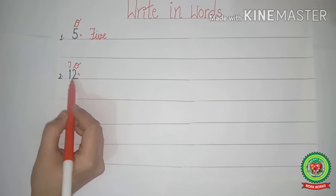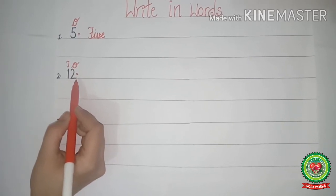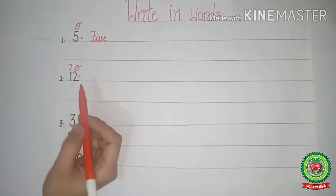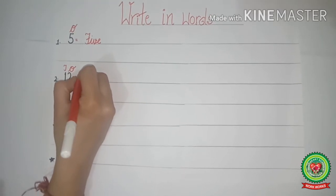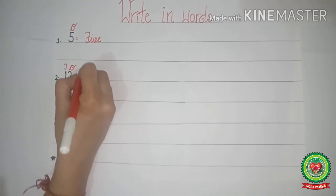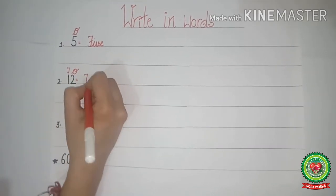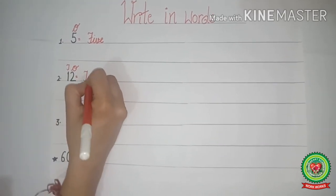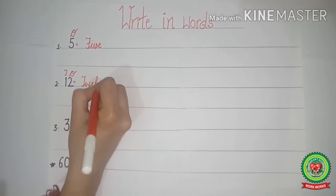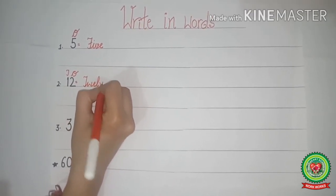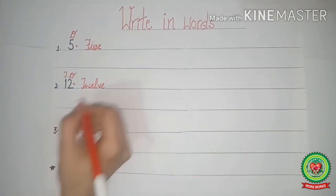So how do we speak 1 and 2 together? 1, 2 - 12. So we will write 12. Spell 12 with me - T-W-E-L-V-E. Spell 12 with me - T-W-E-L-V-E.